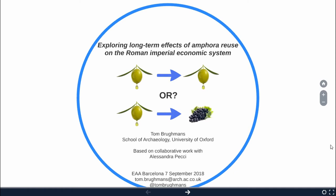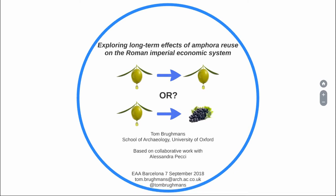I want to talk about something that is a bit of an inconvenient truth in Roman studies, and that is the amphora reuse problem. Amphorae are the main type of evidence that we use in Roman archaeology to talk about long-distance transport of foodstuffs, mainly olive oil, wine and fish products. They are also one of the most used comparable sources of information to talk about centuries-long change in the functioning of the Roman economy.